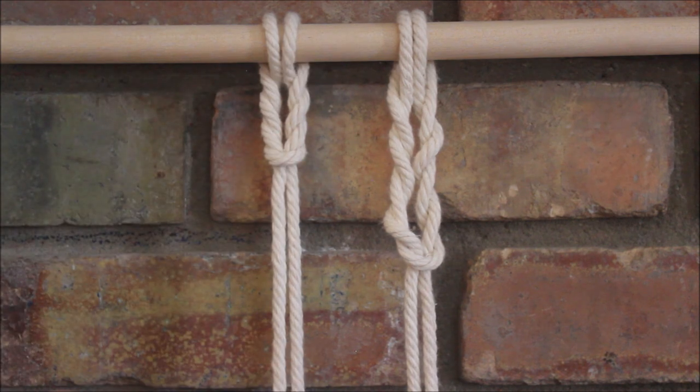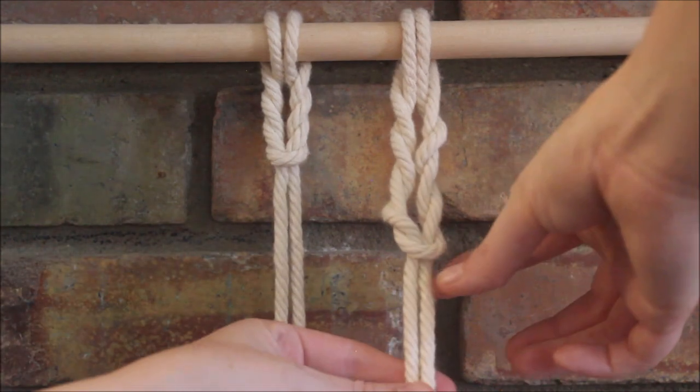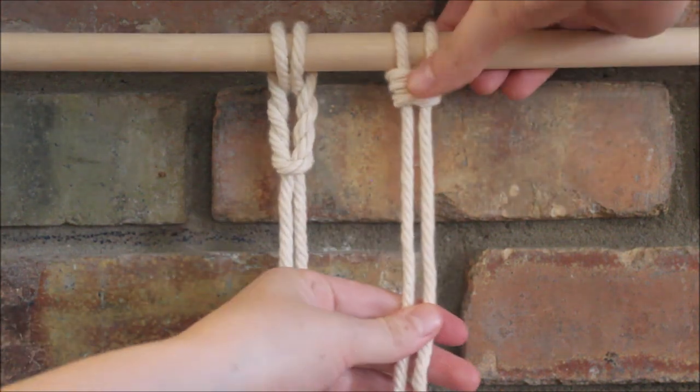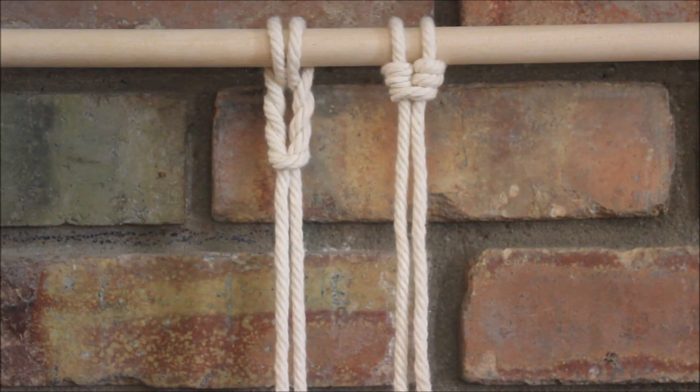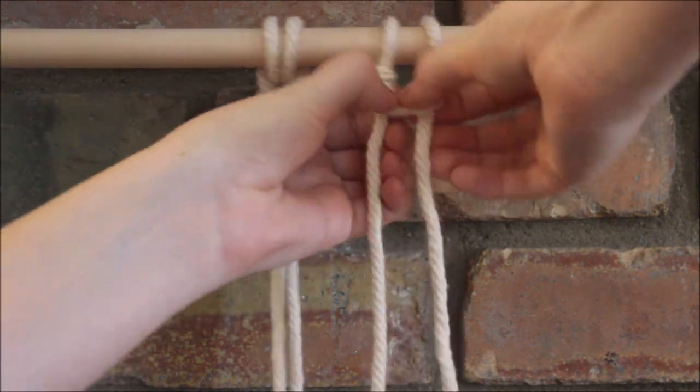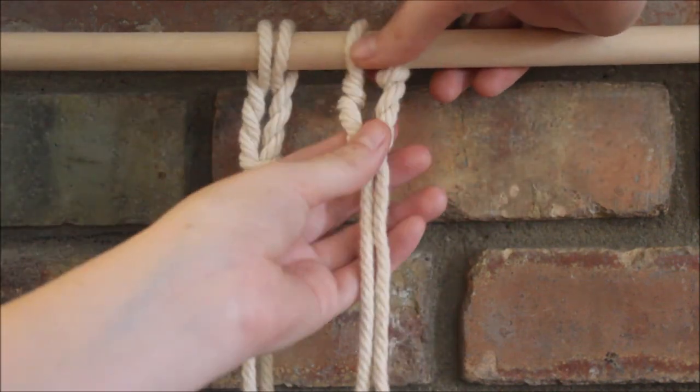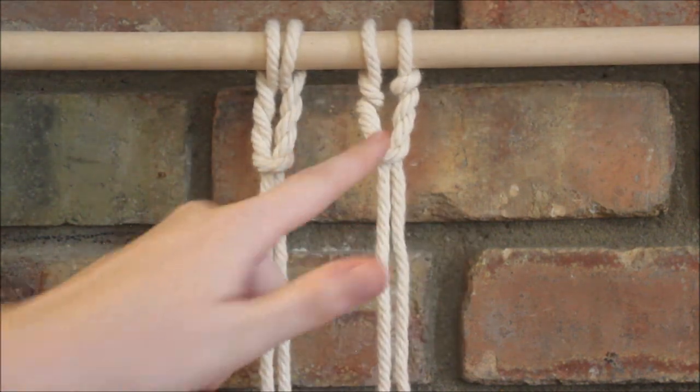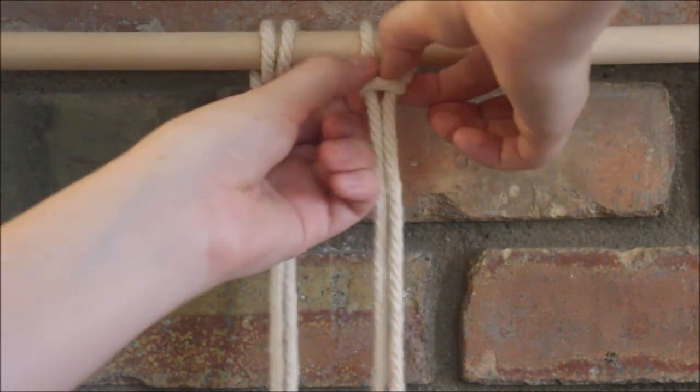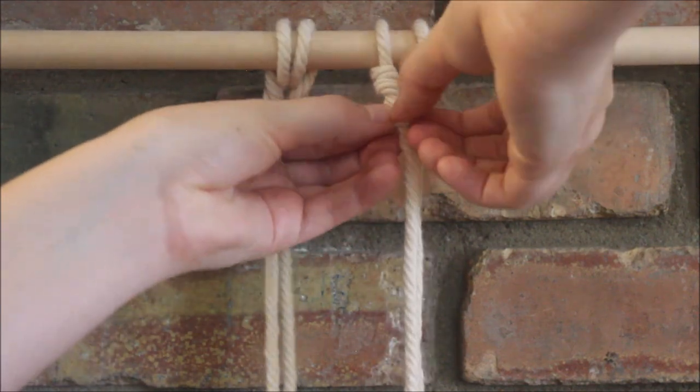Once you have slid it onto your dowel rod, you can adjust the looseness of this knot. So if you want it tighter, you just pull and kind of squish them all up like that, and so it would look something like that if it was tightened all the way. And if you want it looser, you just take and you pull them apart like that. And again to tighten you just push them all the way up, loose pull apart. It's pretty fun and you can play around with it as much as you need to.